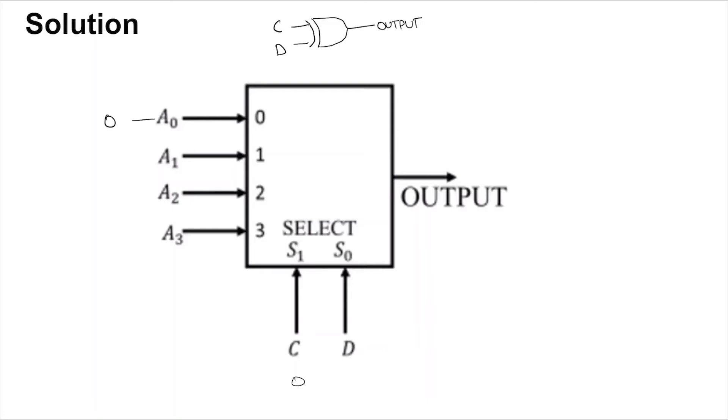When C and D are 0 and 1 respectively, then the output will be whatever is at A1. You want the output to be 1, so you tie A1 to 1. By symmetrical argument, when C and D is 1 and 0, you tie A2 to 1.